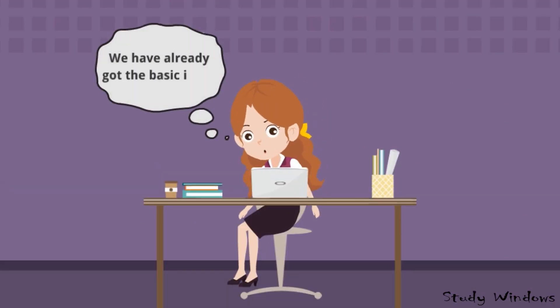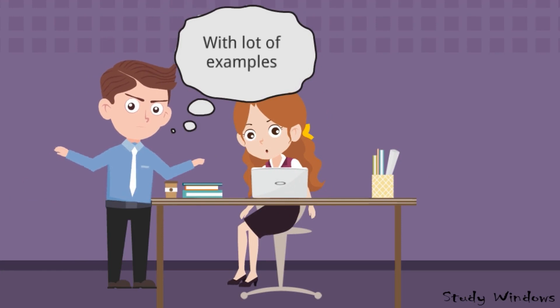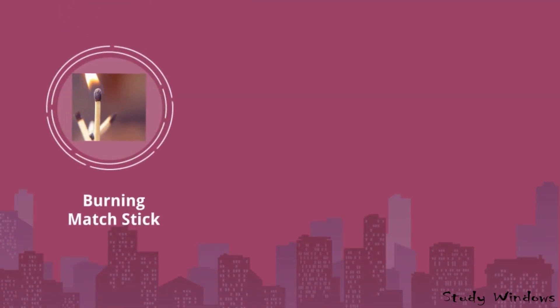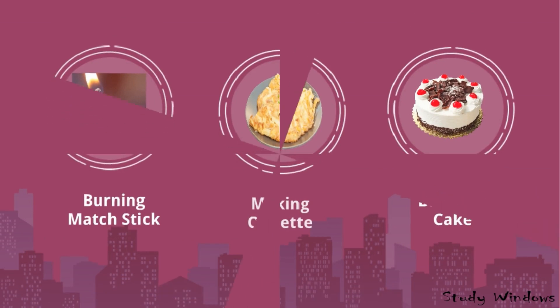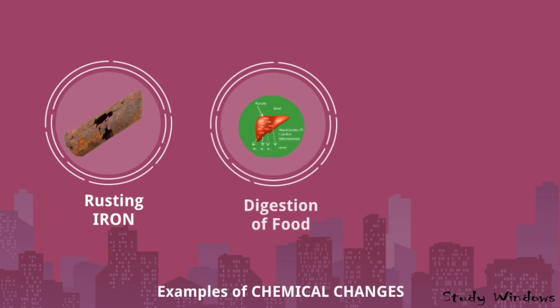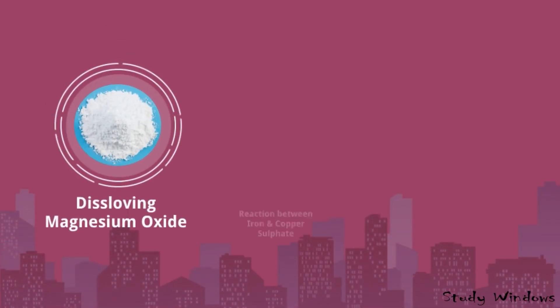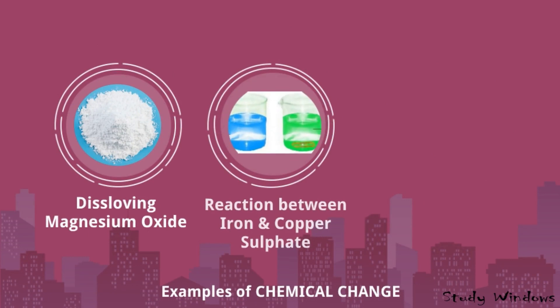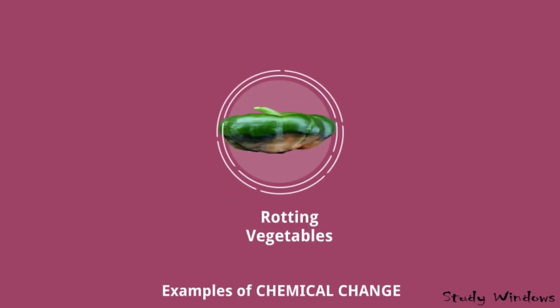We will discuss in detail with lots of examples: burning a match stick, making an omelette, baking a cake, rusting iron, digestion of food, burning magnesium, dissolving magnesium oxide, reaction between iron and copper sulphate, reaction between vinegar and baking soda, and rotting vegetables. These are all examples of chemical change.